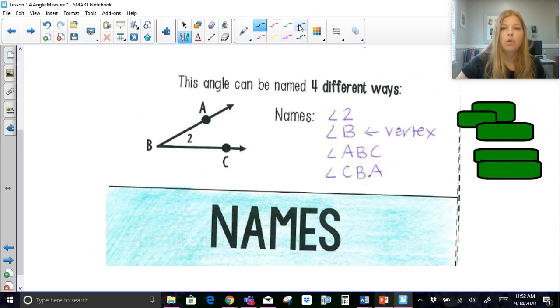I can also name this angle CBA. Notice that the vertex is always in the center. So I would not be able to call it, and I'm just going to sketch over here on the side, angle ACB. Because if I say angle CB, yes, those are the three points on here, but ACB would actually be this. A, C, B. And that would actually be this angle here. And we don't want that angle. We want the angle that is right here. So it's A, B, C, or C, B, A.